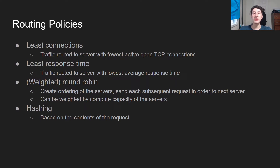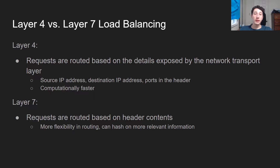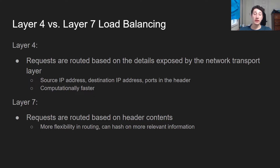So what can you actually hash on? There's the concept of layer four versus layer seven load balancing. In layer four, requests are routed based on the low-level network transport layer, giving you things like the IP address of both the source and destination, as well as ports and the header. Since you have less information to consider, this is computationally faster and requires less resources. Layer seven, on the other hand, actually lets you look into the contents of the packet, which means requests are routed based on those. This provides more flexibility and allows for smarter routing, and you can hash on more relevant information.